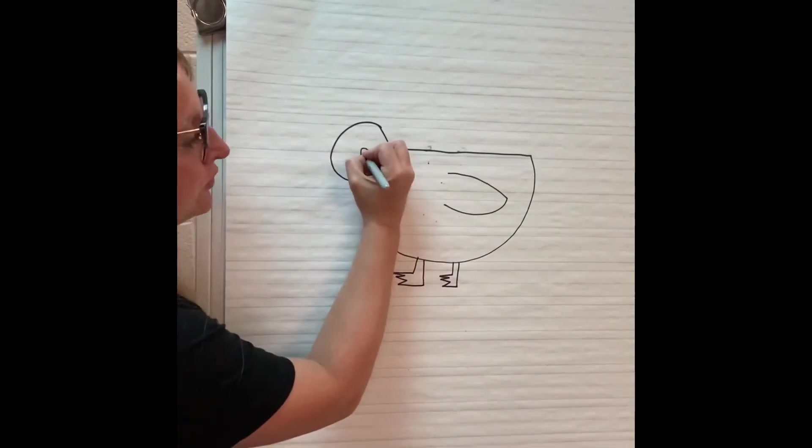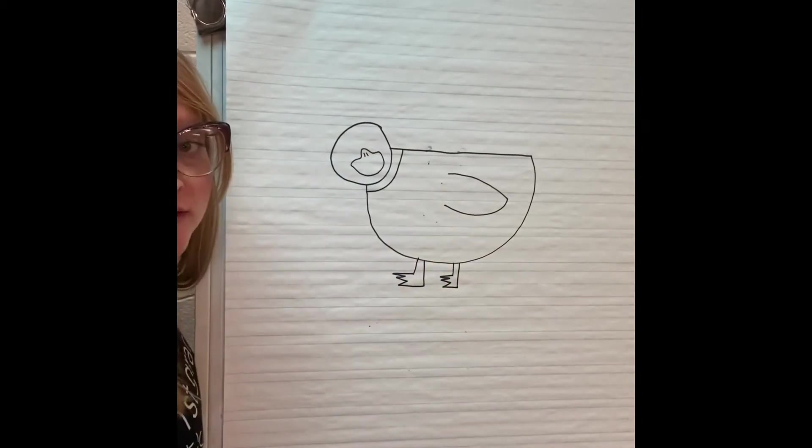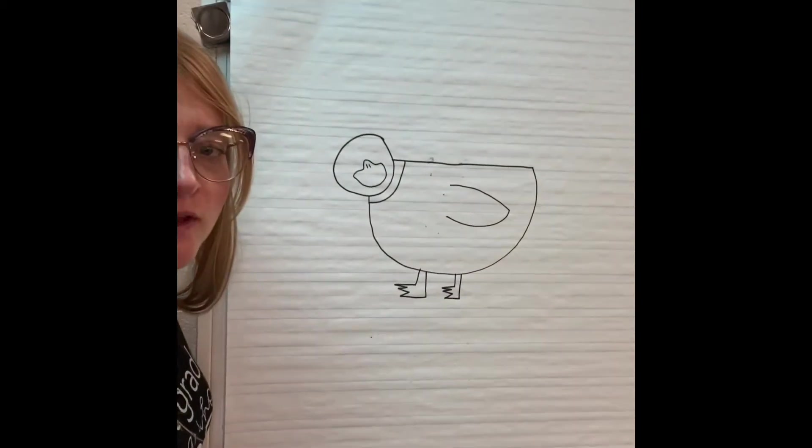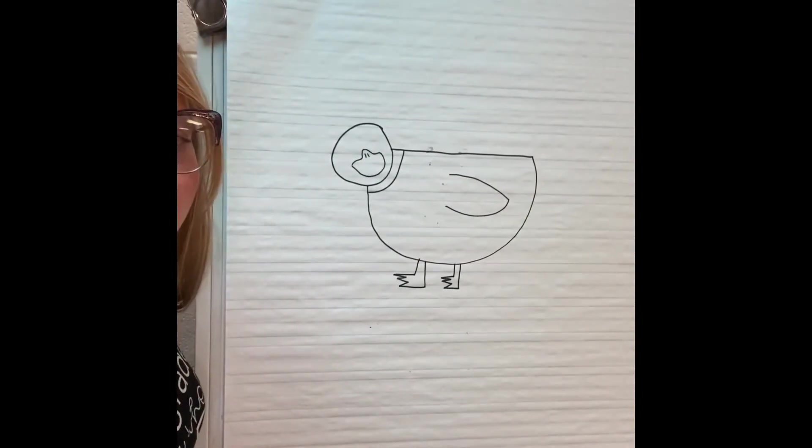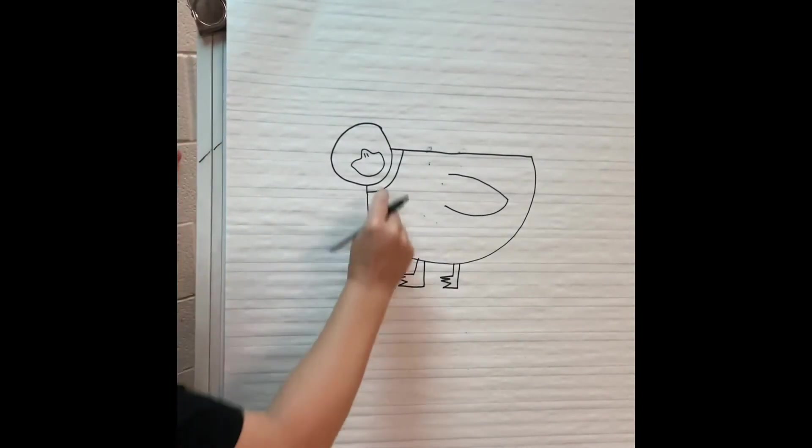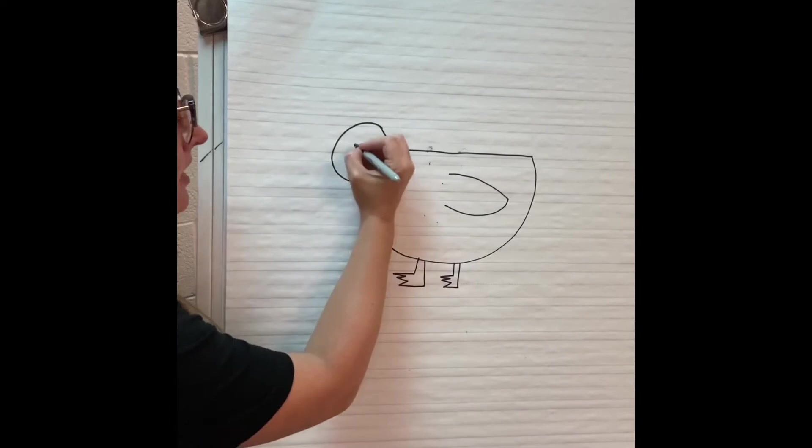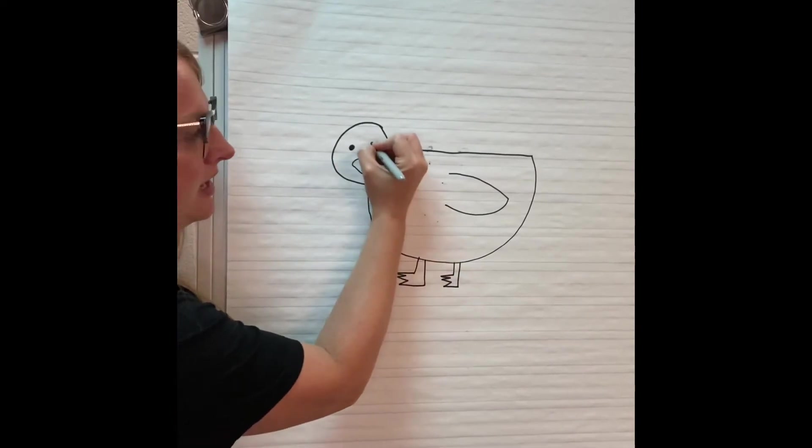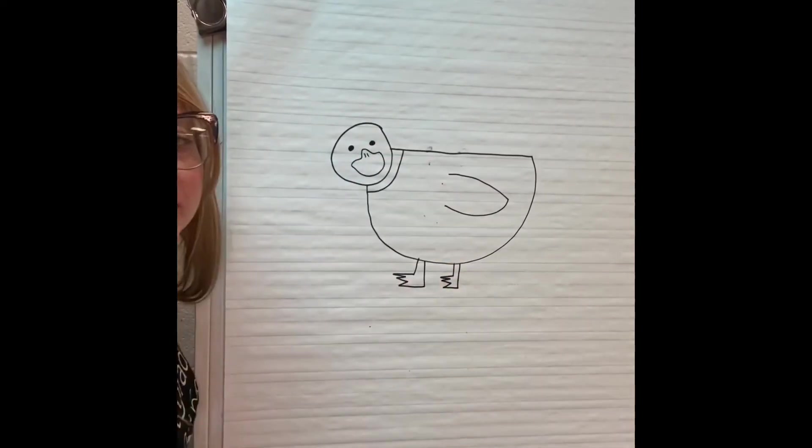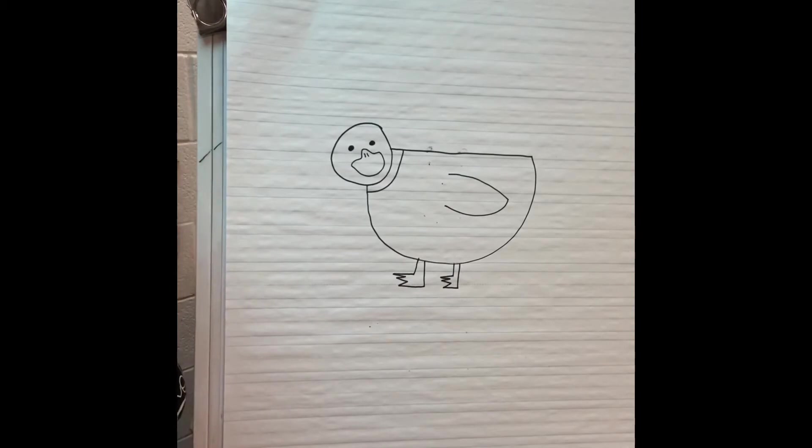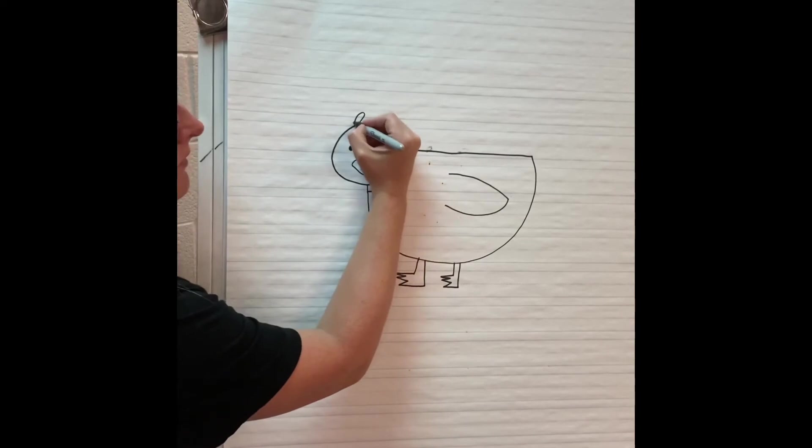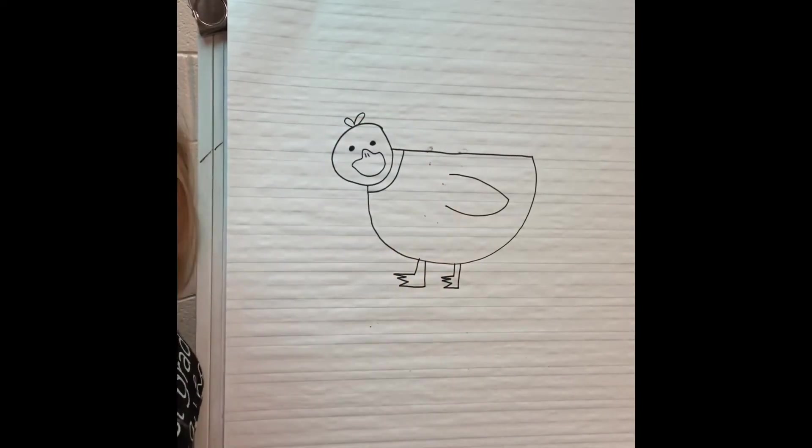But I'm going to do two little lines in the nose, which let me zoom in so you can see that. Can you zoom in? No. Okay. If you look closely, I just did two little lines right there. An eye and an eye. One and two up at the top.